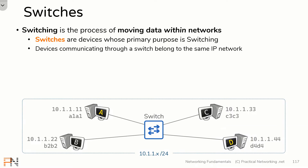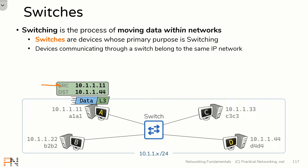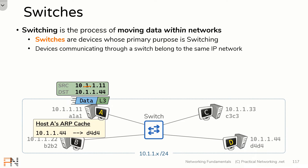In the last lesson, we described the host role in all this. The host is going to generate some data to send to host D, then add a layer 3 header including the source of host A and a destination of host D's IP address. Then host A is going to perform ARP to figure out the MAC address which correlates to that destination IP address. Then host A is going to add a layer 2 header indicating host A's MAC address and host D's MAC address. All of that still applies. In this lesson, we're just going to be focusing on the switch.